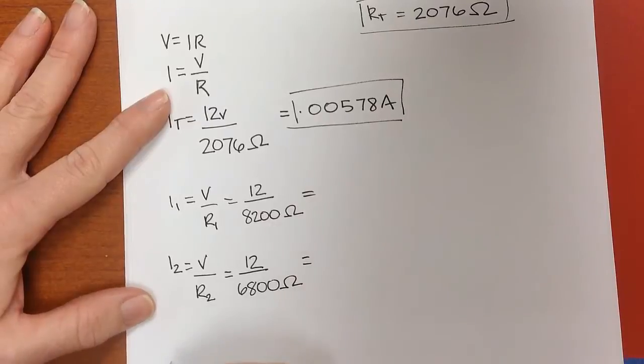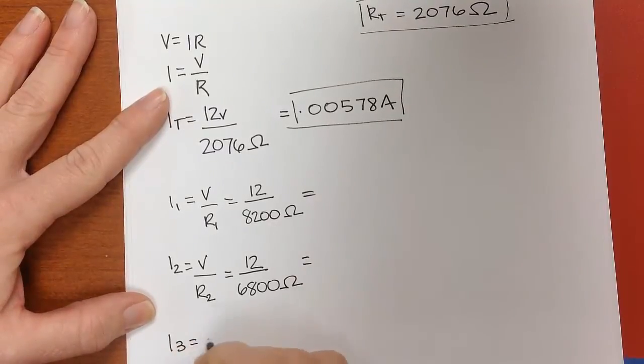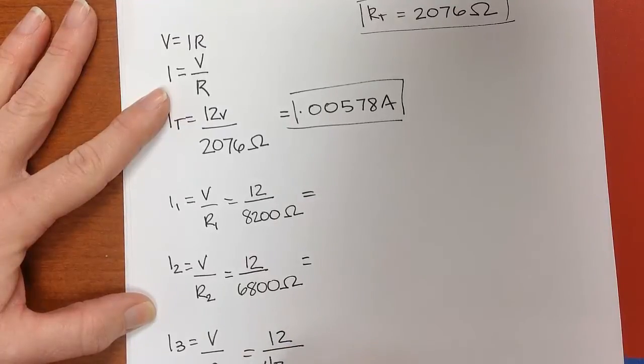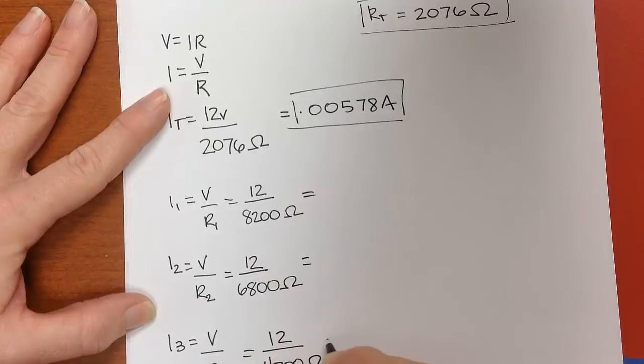And then finally I3 is going to be V divided by R3, and that's going to be 12 divided by 4,700 ohms.